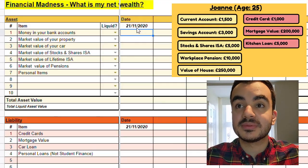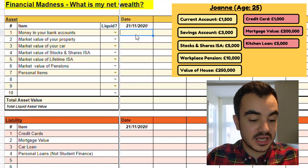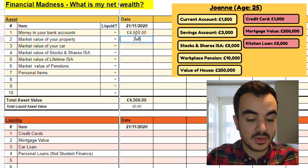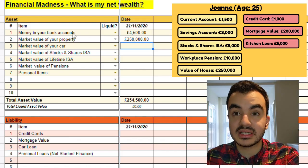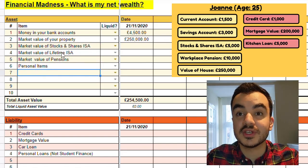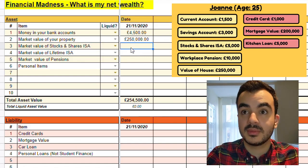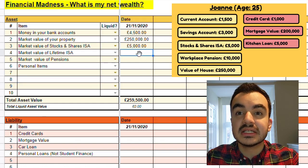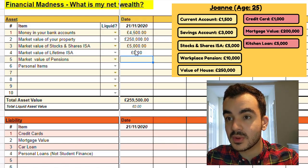So let's figure out how to put this into our spreadsheet. The first example we've got is the money in your bank accounts — this is going to be the total of her current and savings account, so that is going to be £4,500. The market value of the property we know this, it's currently valued at £250,000. The market value of your car — it's not stated here so let's assume that she doesn't actually have a car, so we can delete this and shift everything up. The next example is the value of stocks and shares, so we've got this down as £5,000. The next item is value of lifetime ISA — again it doesn't look like she has one so we can go ahead and delete this, but I'm just going to keep it in here for a second because I want to demonstrate something a little bit later on. And then value of pensions — we've got this as well and that's £10,000.